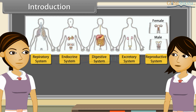Each system is specialised to do a specific function such as nutrition, digestion, respiration, transport of materials, and excretion respectively. In each system, all the organs work together so that the whole system can work properly. In other words, all the organs of a system coordinate with each other so that the system can work properly.